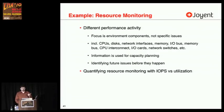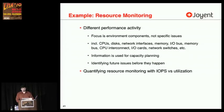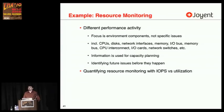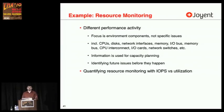As a different topic: resource monitoring, which is different from workload analysis. Workload analysis — latency is a great tool. For resource monitoring, the focus is environmental components, not specific issues — that includes CPUs, disks, network interfaces, memory, IO buses, CPU interconnect. Information for resource monitoring is used for capacity planning. The key difference is with resource monitoring, I would like to identify future issues before they happen. With workload analysis and looking at latency, that's good at identifying an issue once it's happened. But we also like to monitor resource components to see how utilized they are, to predict the bad case before we hit it.